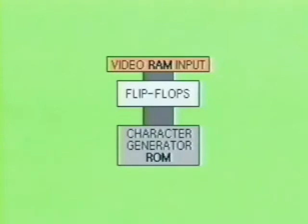The video RAM was fed through a latching device into the character generator. The character generator is nothing more than a ROM coding device. It receives the 7-bit formatted data and outputs 7 scan lines of 5 dots each per character. If you were to magnify a single character section, you would notice that each character could be illustrated in a 5×7 block by simply turning on or off each point of light within the designated area.